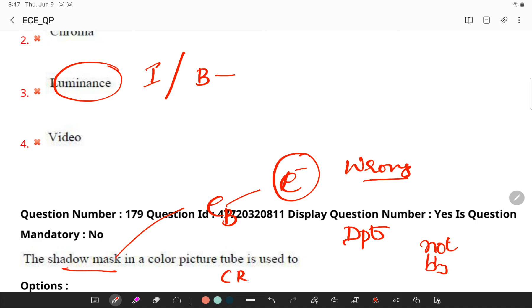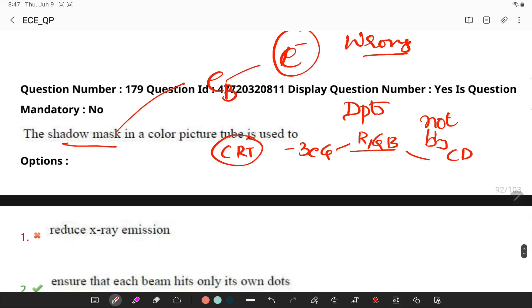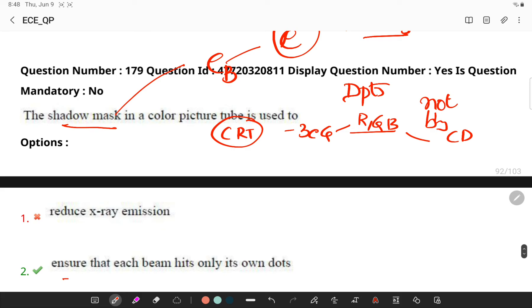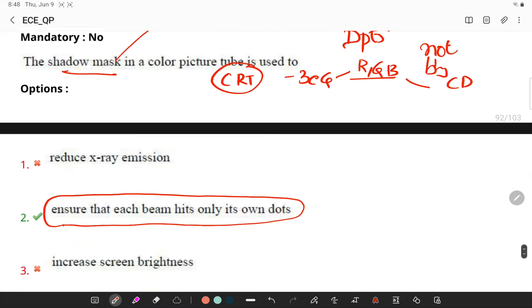Generally CRT cathode ray tubes will be having three electron guns which are red, green, and blue, which are present for color display. So if you see the options, they ensure that each beam hits only its own dots.